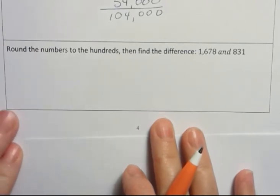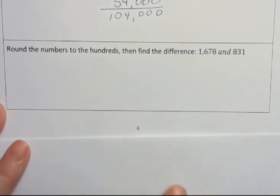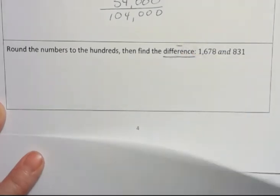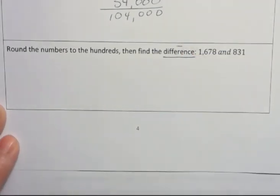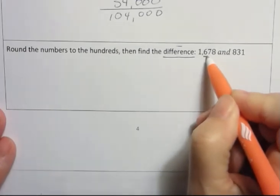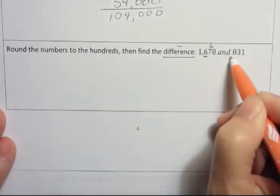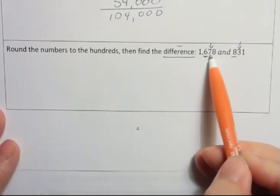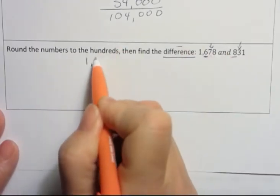And finally, we have round to the hundreds, then find the difference. A difference is a subtraction problem, right? So we're going to subtract these, we're going to round to the hundreds, the hundreds is right here, so we're going to be looking at the numbers in the tens place. Well, when I look one to the right here, that is greater than 5, so that means that's going to go up to 1,700.